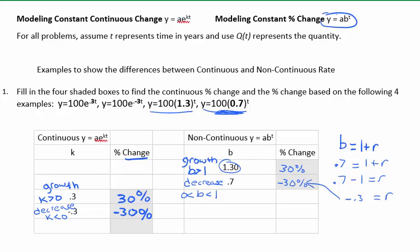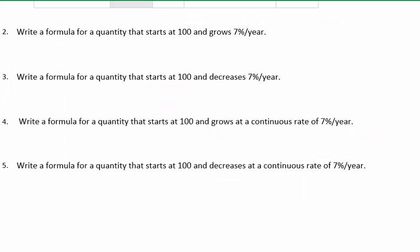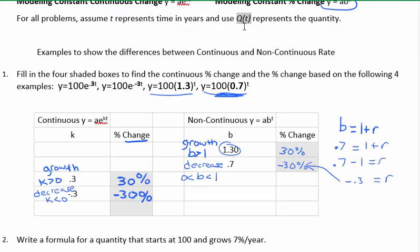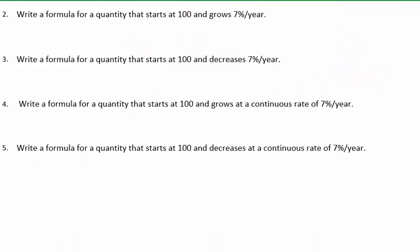Now I'll write formulas for quantities. First, a quantity that starts at 100 and grows 7% a year, using q of t for quantity and t for time in years. Since it gives a growth rate and does not say continuous, I'll use the formula ab to the t. A is 100; to grow 7%, b would be 1.07.